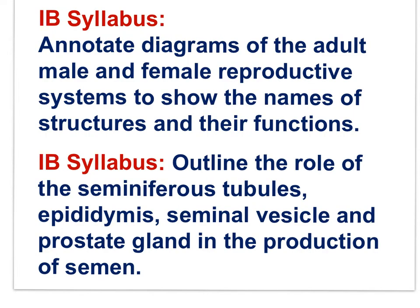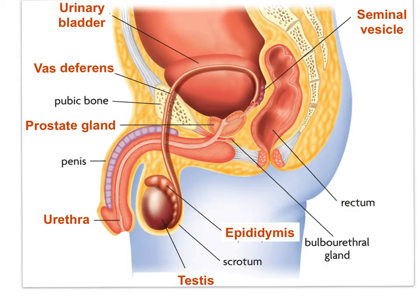Here are two IB syllabus statements central to most of this movie. Annotate diagrams of the adult male and female reproductive systems to show the names of structures and their functions. Outline the role of the seminiferous tubules, epididymis, seminal vesicle, and prostate gland in the production of semen.